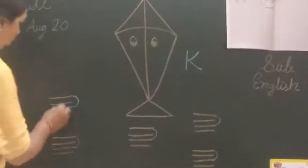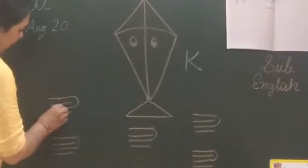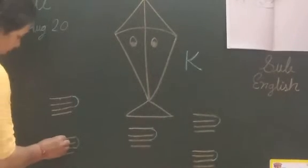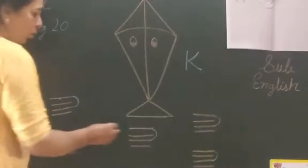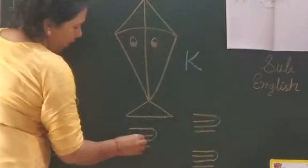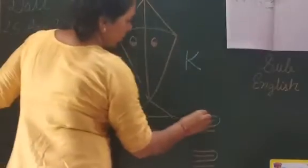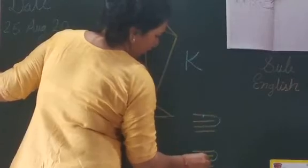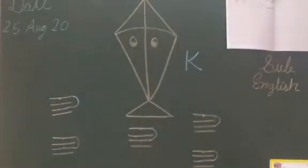First, we draw three dots — one on the first line and one on the third line. In each line, first we draw two dots. It's easy to write K this way.